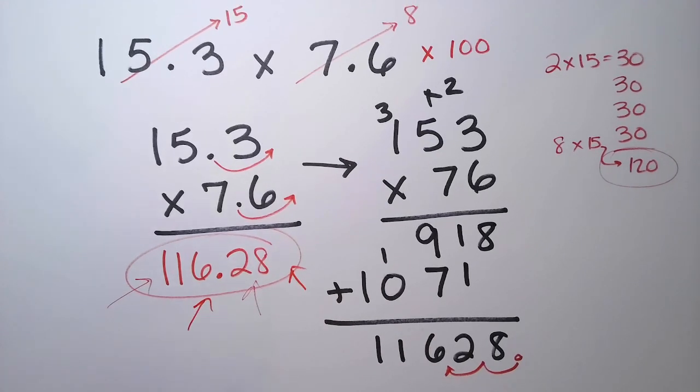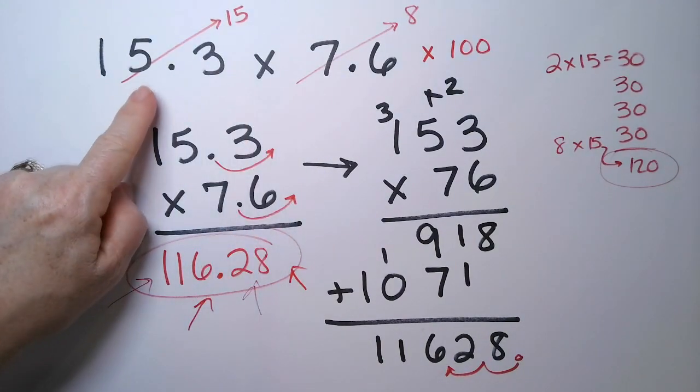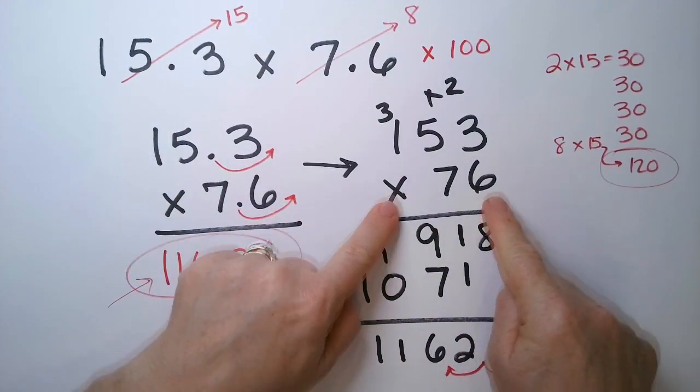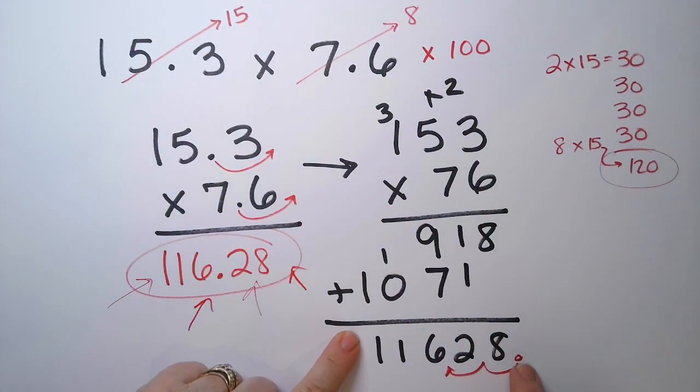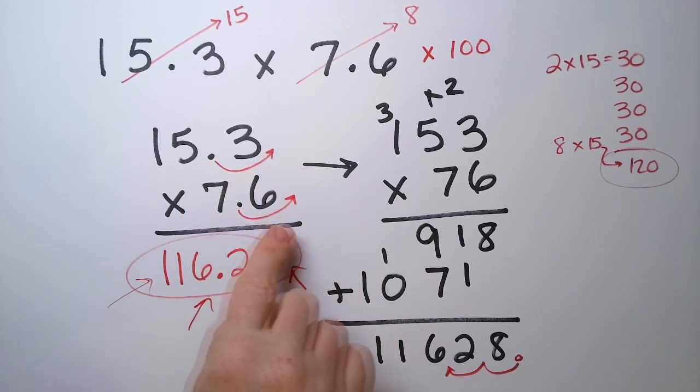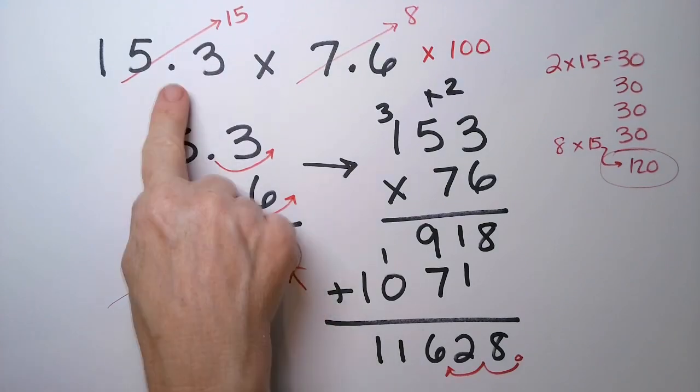So to kind of go over this one more time. It doesn't matter where the decimal point is. Just convert it to whole numbers. Do your multiplication. Then put that decimal point back in. You figure out where the decimal point goes by counting the number of hops that you did to make it from a decimal to a whole number and then put it back in.